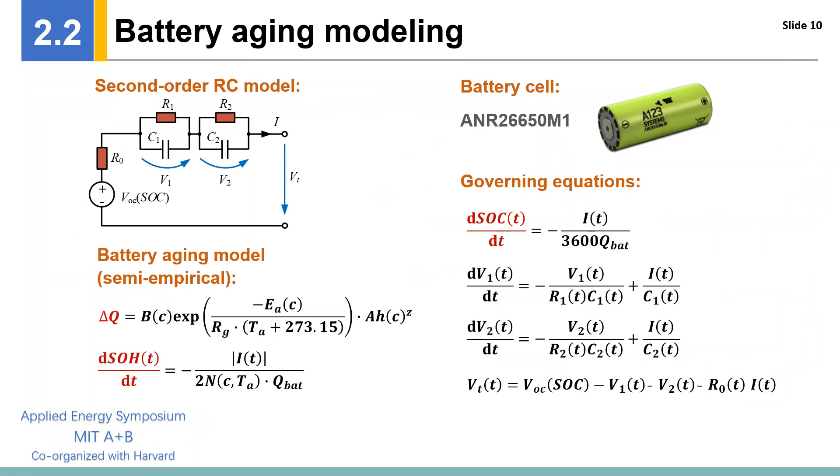The second-order RC model is adopted in our research for more accurate modeling of onboard lithium battery cells. The ANR26650M1 lithium-iron phosphate cell is capable of very high power and long life, which is suitable to be equipped in hybrid electric vehicles, so it is adopted in our research. The battery aging behavior is characterized by a semi-empirical model. Both the lithium battery cell and the semi-empirical model have been validated in many related research works.